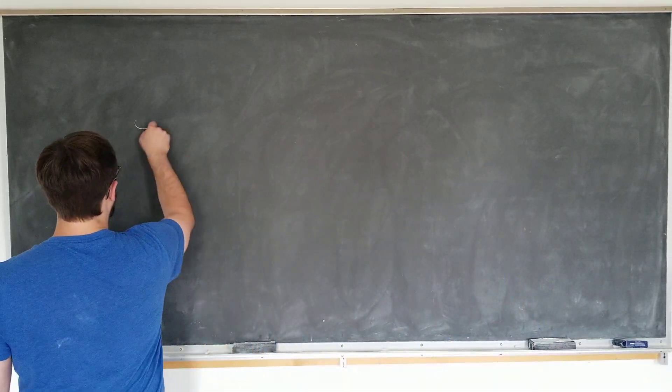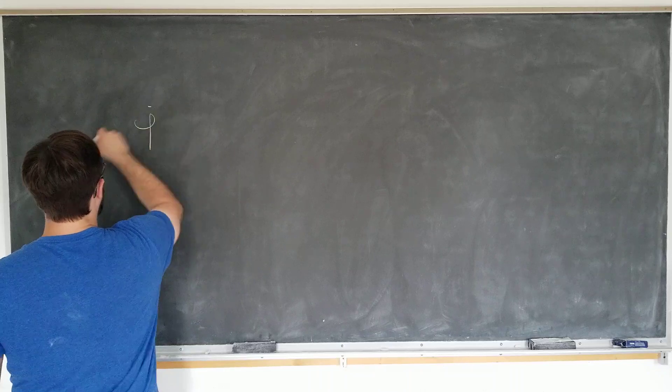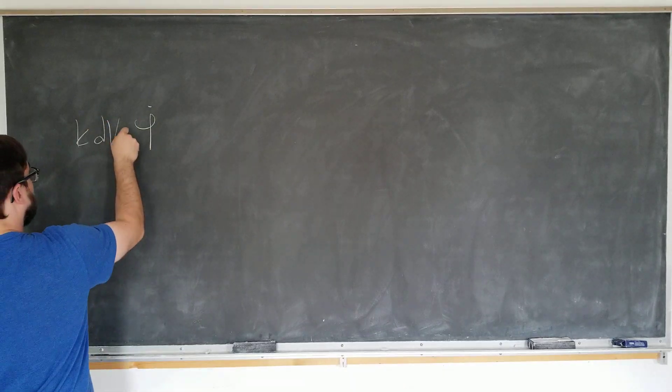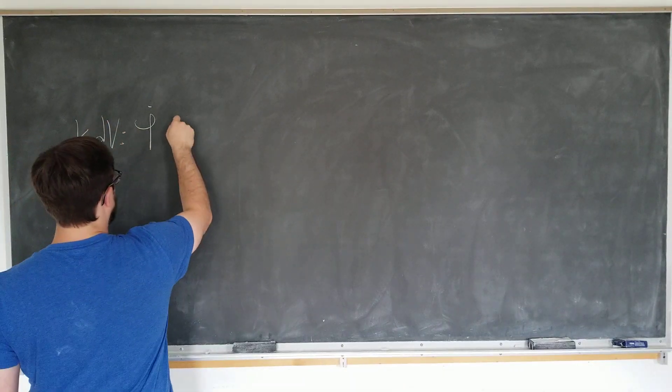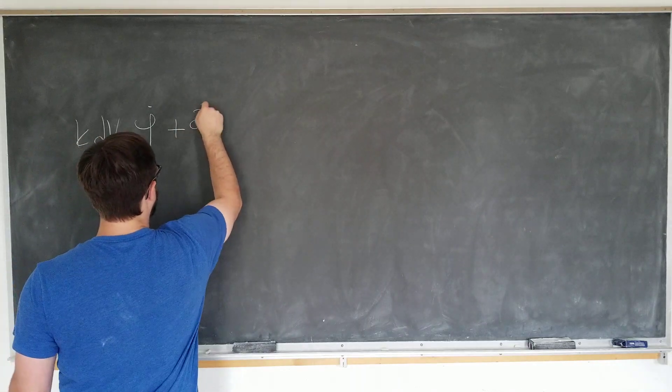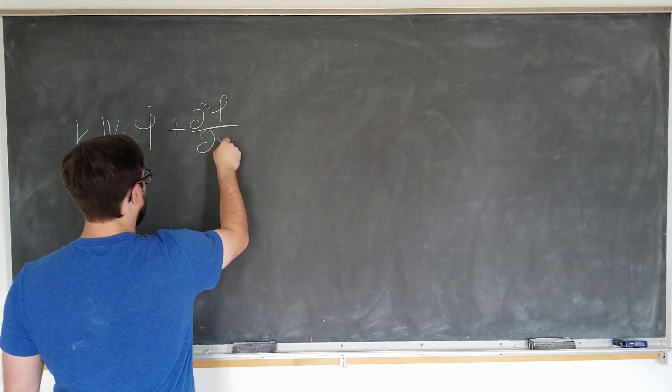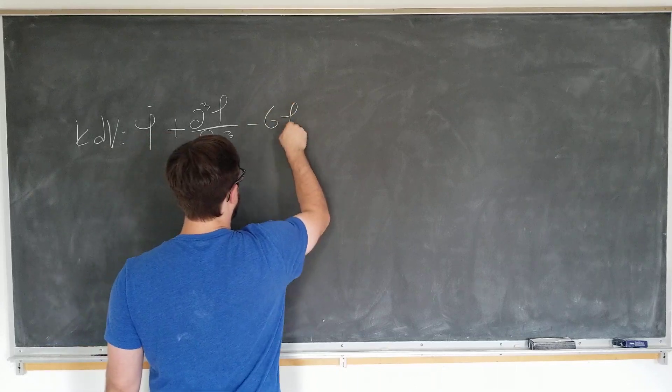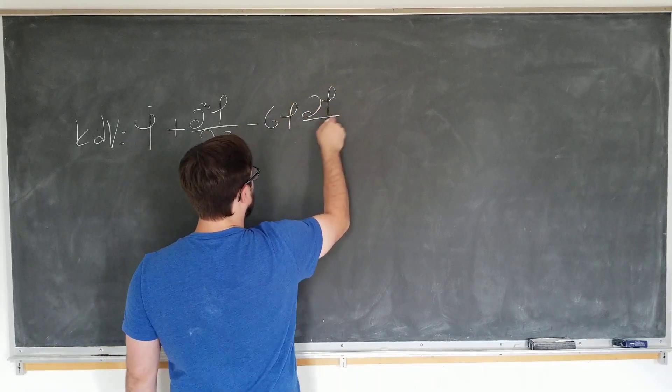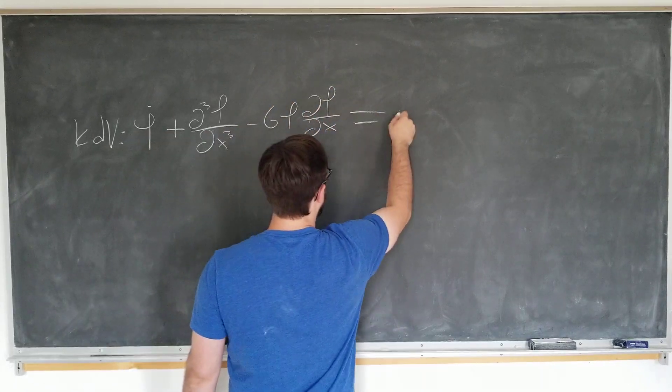Recall from the previous video, the KDV equation stated that psi dot plus d cubed psi by dx cubed minus 6 psi d psi by dx is equal to 0.